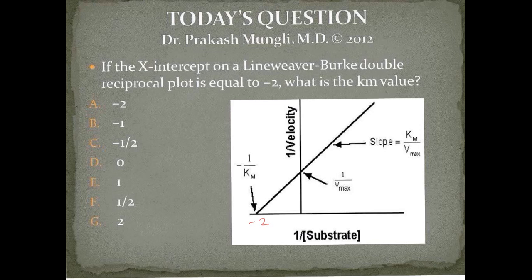First thing to remember is all these numbers will be in reciprocal. In the x-axis you see 1 over substrate concentration, in the y-axis you can see 1 over velocity, that is initial velocity.